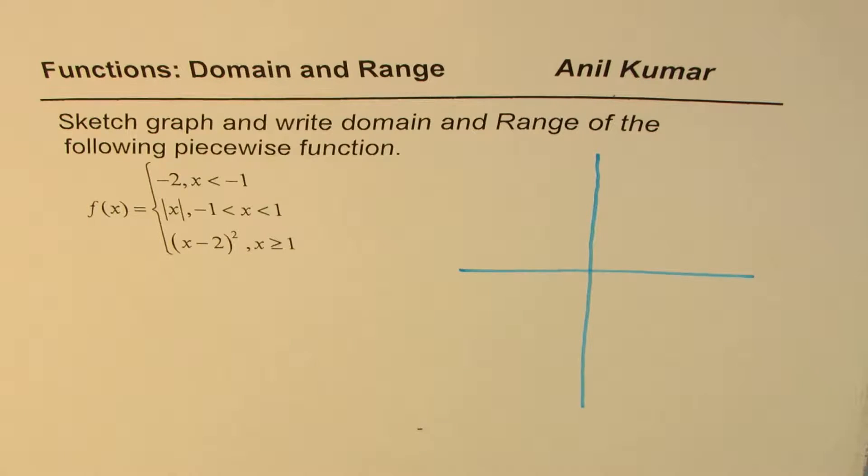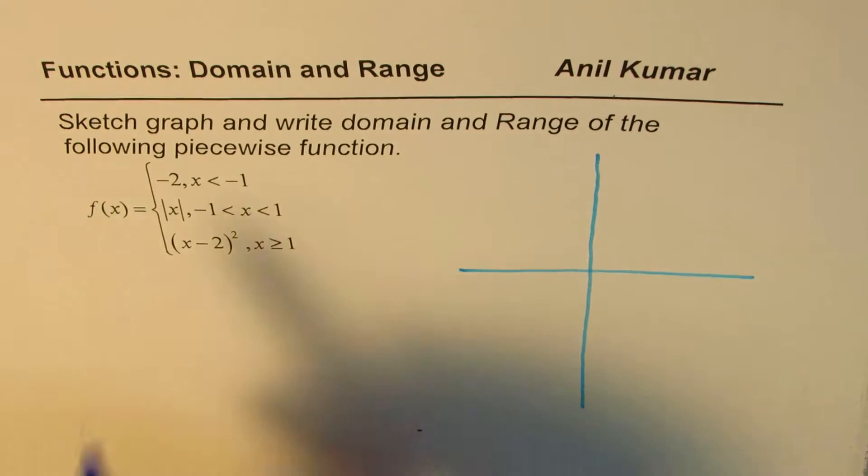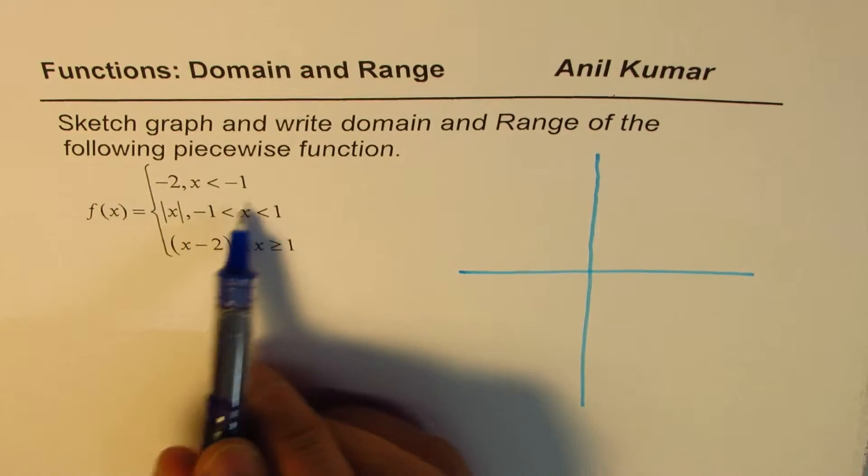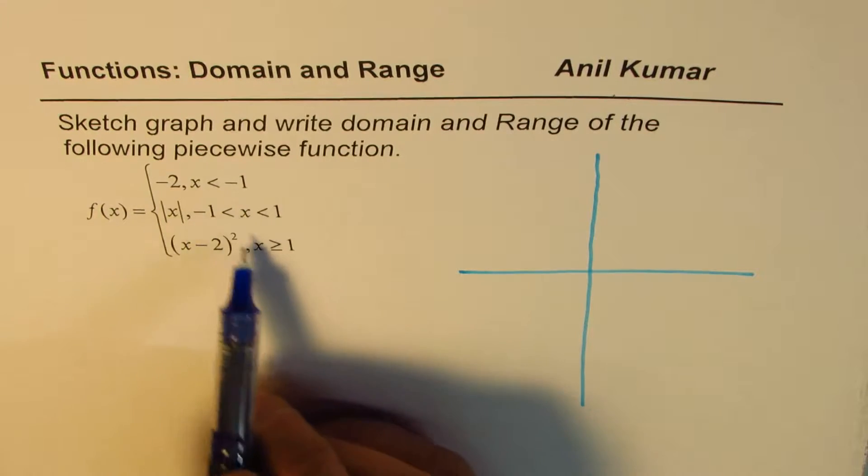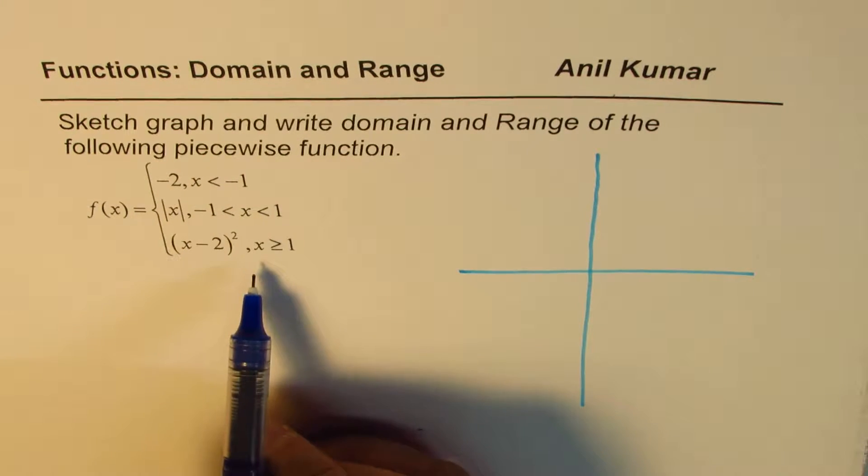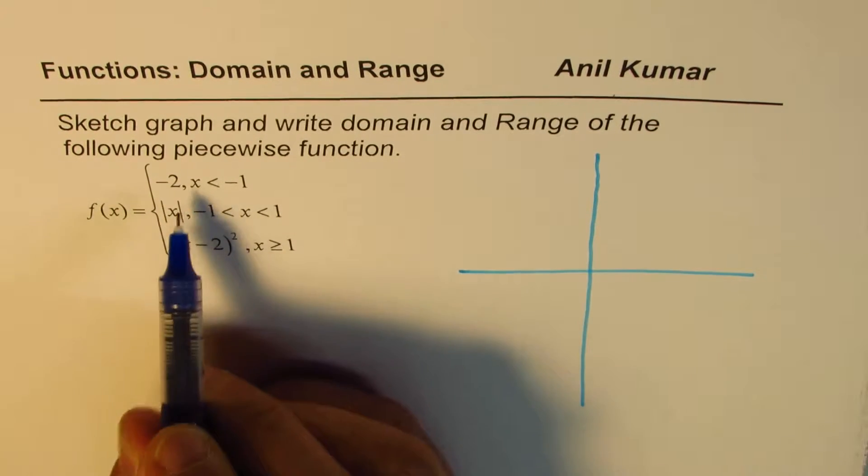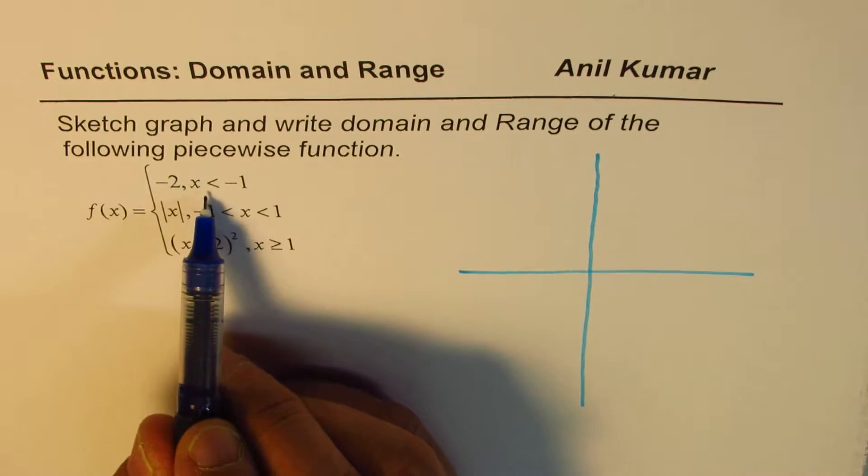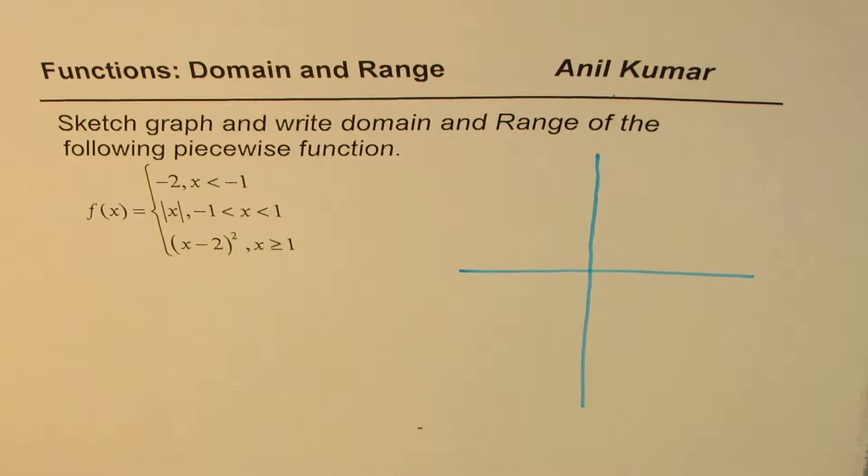Now whenever we have piecewise function, it's a good idea to find some values within the given set of values. So we are saying f of x is minus 2 when x is less than minus 1.